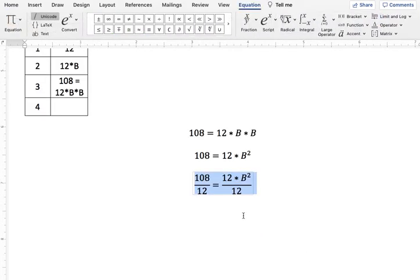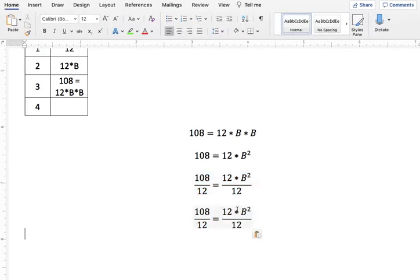And let's simplify this. Since we have times 12 divided by 12, they cancel each other out. Or more specifically, 12 divided by 12 just becomes one, and so you have times B squared, which is just B squared. On your left-hand side, 108 divided by 12 is 9. So now you have 9 equals B squared.